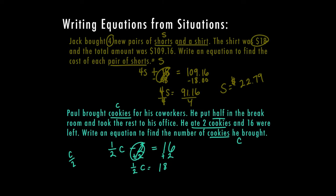18. And in this case, that means half the cookies was 18. So in order to solve for the total cookies, I want to multiply by two. So that means that the total number of cookies is 36. But just